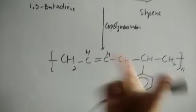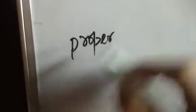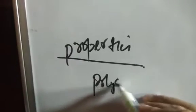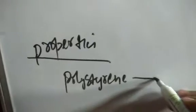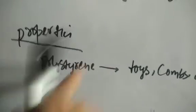In copolymerization, we have more than one unit present, and the properties change — there will be a drastic change in properties. For example, if we take polystyrene, its nature is that it is a bit soft and not mechanically that hard, so it can be used for making toys, combs, etc.